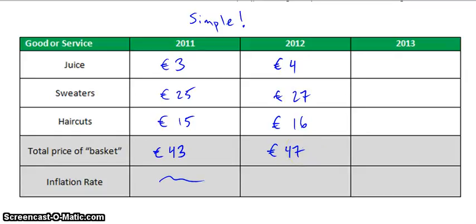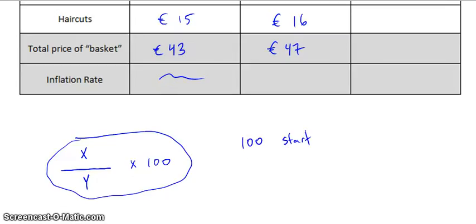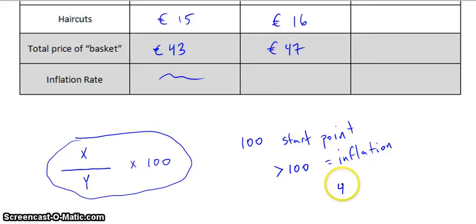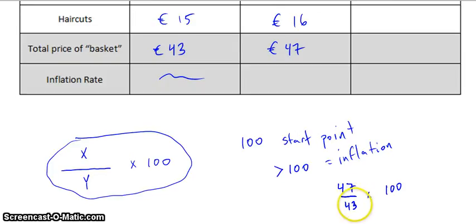And now we can use our index to calculate what the inflation rate was. So this is our formula down here: one number divided by another number times 100. And remember, 100 is our starting point, which means to show inflation, we need to show a number that's greater than 100.